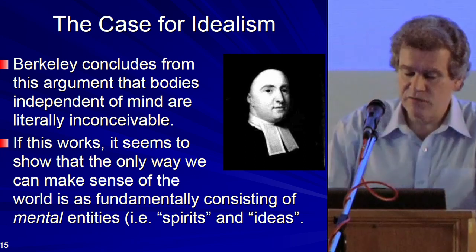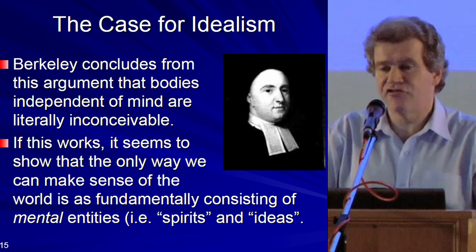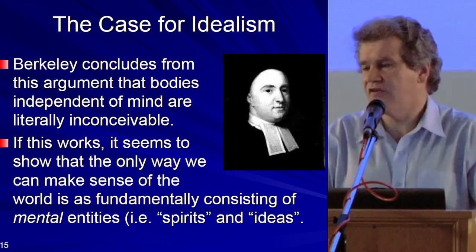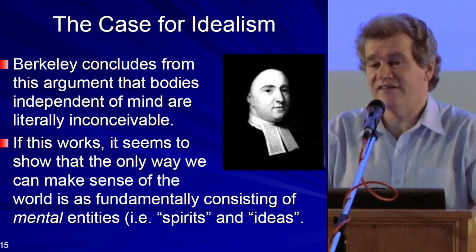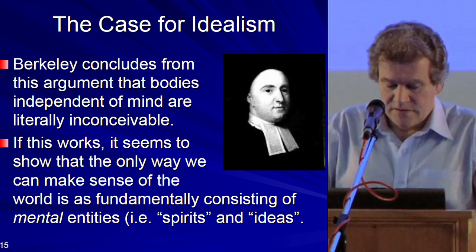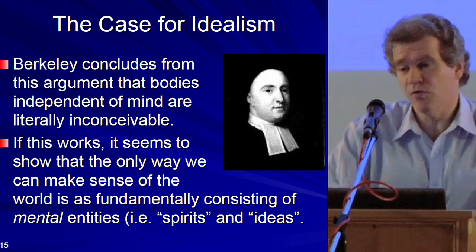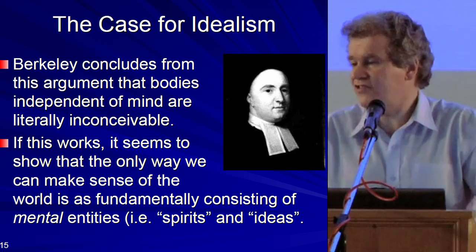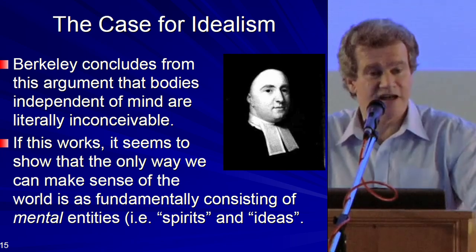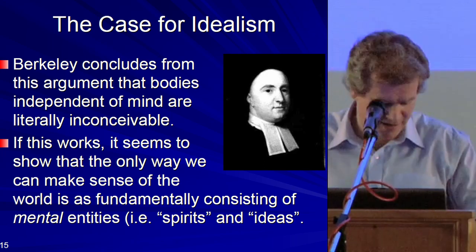Berkeley wants to say that if he can't form the idea of a primary quality circle without the secondary quality colour, and if all his ideas of secondary qualities are intrinsically mental and cannot exist outside a mind, then he cannot even conceive of a primary quality existing independently of a mind. That's why he puts such emphasis on abstraction — most of the introduction to Berkeley's Principles is devoted to an attack on abstraction. Berkeley concludes that bodies independent of mind are literally inconceivable: you cannot even conceive of an object existing outside a mind.